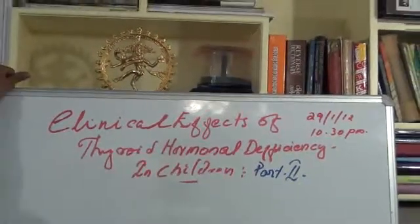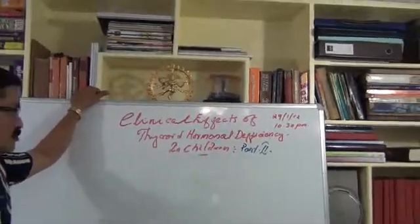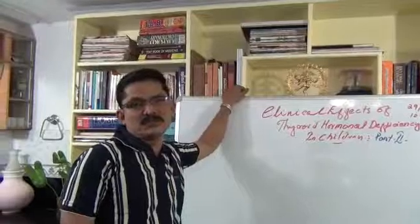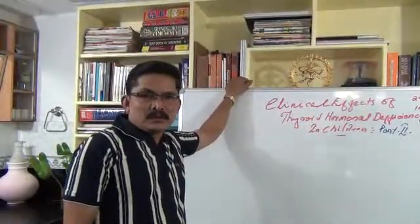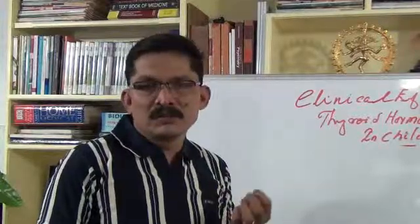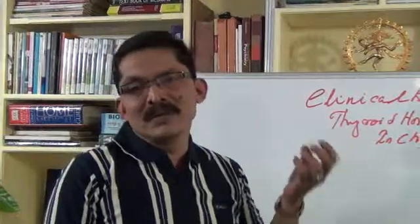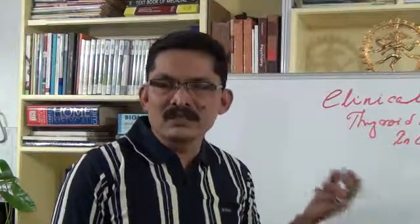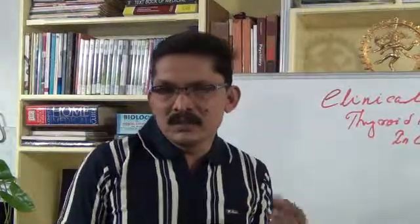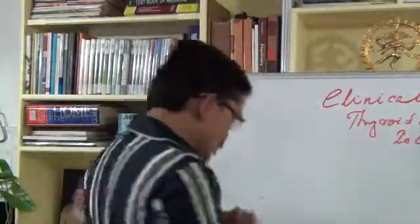Dear friends and students, today we are going to discuss the second part of thyroid symptoms, especially regarding the hypothyroid effect in children. The expected symptoms of a hypothyroid child — such as dry skin, fatty body, asymptomatic presentation, or being a very good baby — were discussed in previous classes. Today I am going to discuss the uncommon or unexpected symptoms of a hypothyroid child.